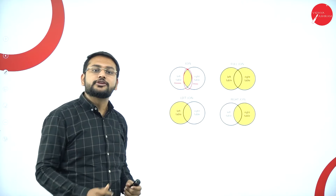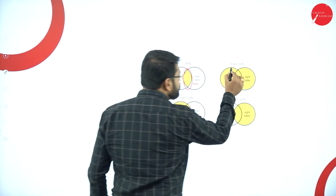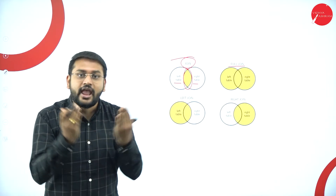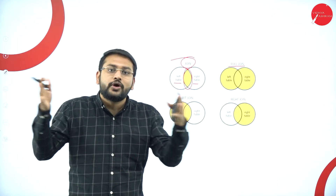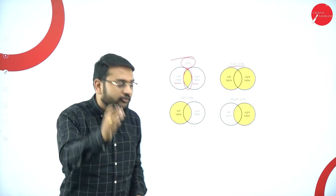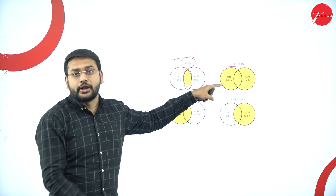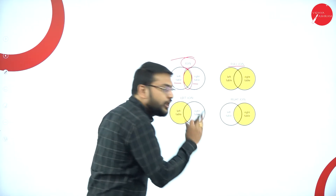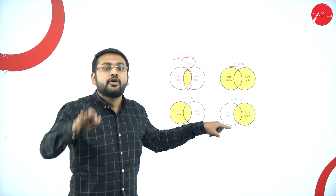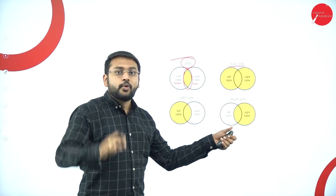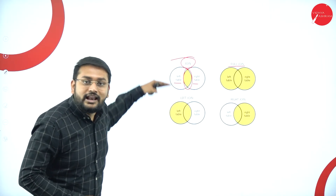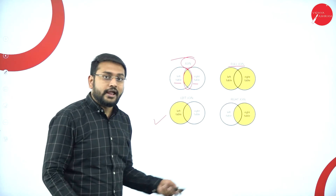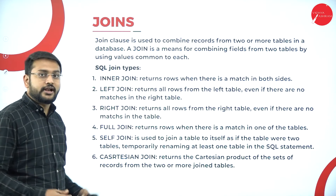When I perform a Full Join, the combination of both tables — all columns from both — will be in the result. For a Right Join, the complete right-side table including the common elements from the left-side table will be the output. For a Left Join, the complete left-side table including the common elements from the right-side table is what you get.